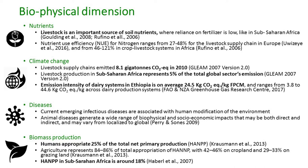We estimate livestock supply chains emit about 8.1 gigatons of CO2 equivalent. Emission intensity in Ethiopia averages 24 kilograms of CO2 per kilogram of product, compared to a global average of 2 to 3, leaving huge scope for improvement. In some countries like Uruguay and New Zealand, livestock are the largest source of anthropogenic greenhouse gas emissions.